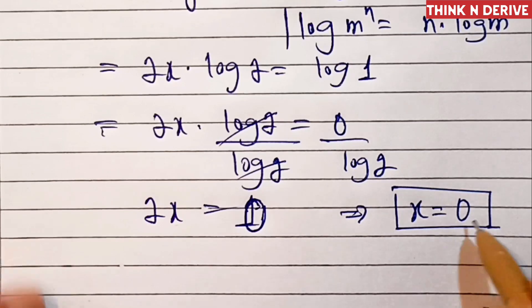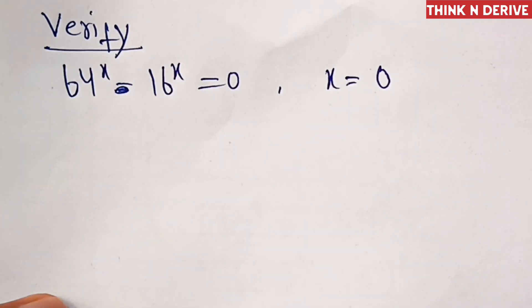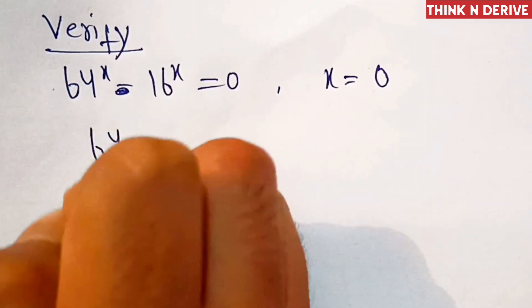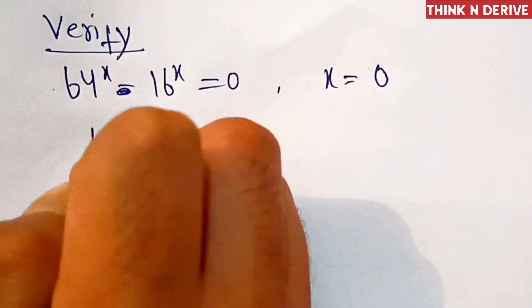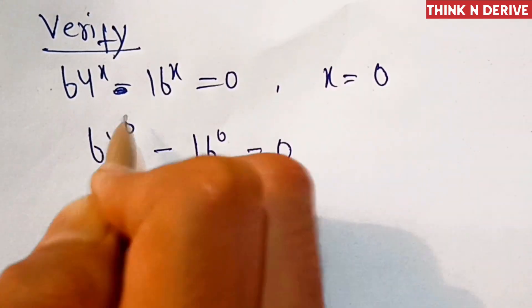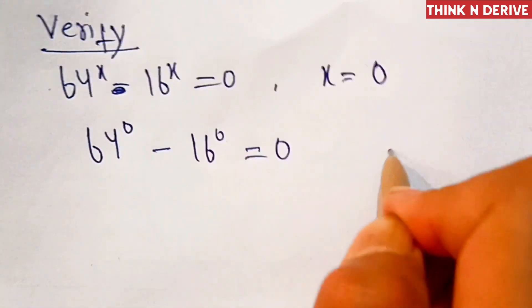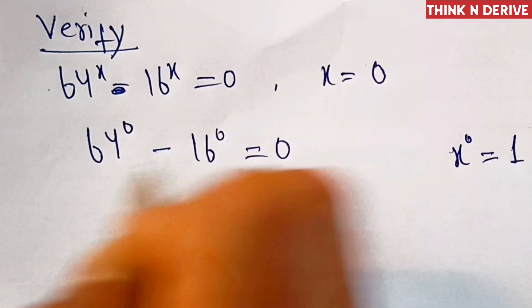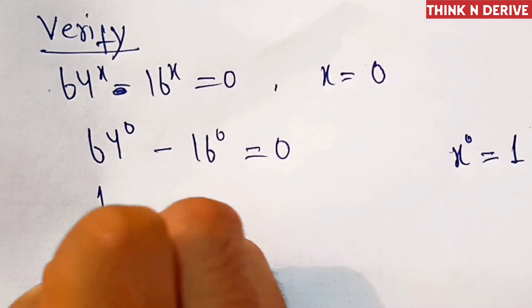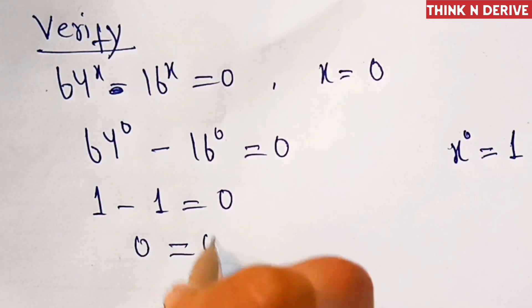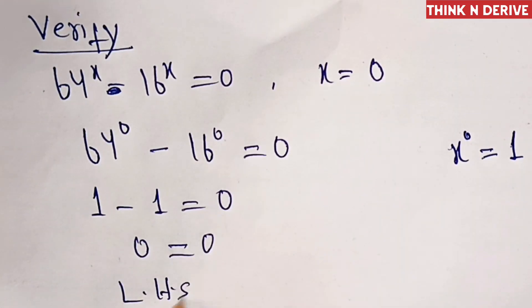Now let's verify this. We'll put the value in our question. This will become 64 power 0 minus 16 power 0 equal to 0. Now anything power 0 — we know x power 0 is equal to 1 — so this will become 1 minus 1 equal to 0. And 1 minus 1 is equal to 0. LHS is equal to RHS.